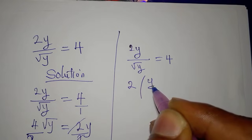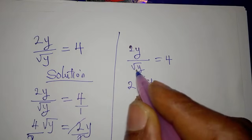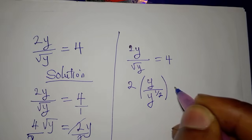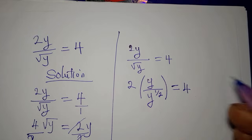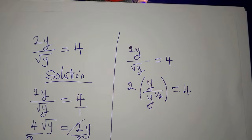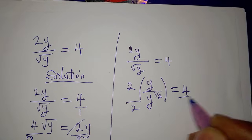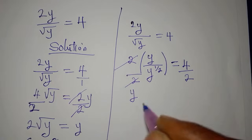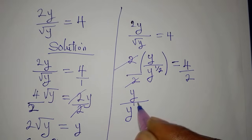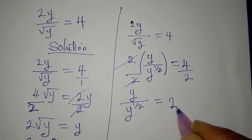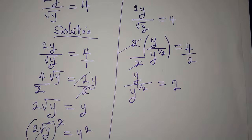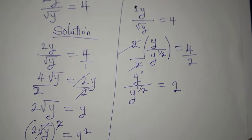What if 2 comes out, then we have y over square root of y, and the square root of y is the same as y to the power of 1/2, and this equals 4. Dividing both sides by 2 gives y over y to the power of 1/2 equals 2. Now I'll apply the laws of indices, since y is the same as y to the power of 1.